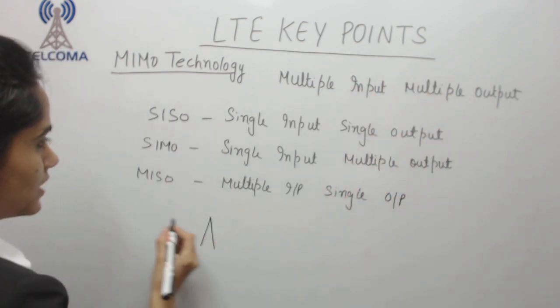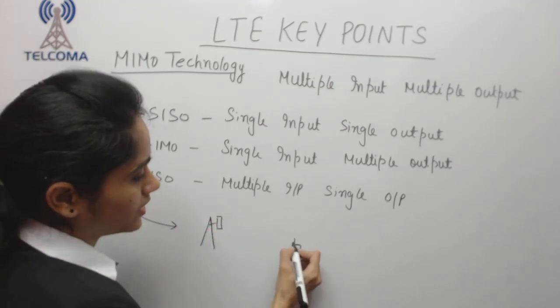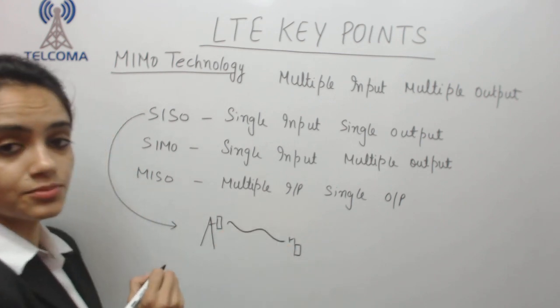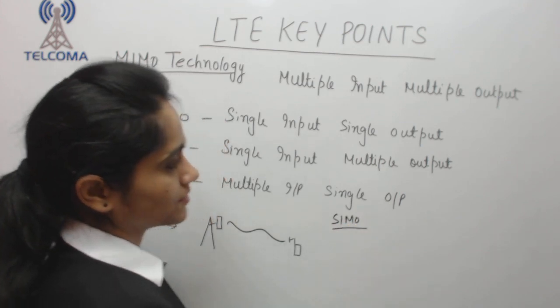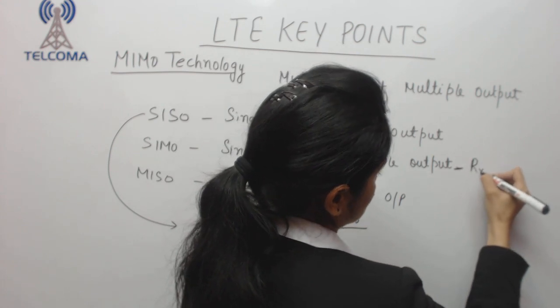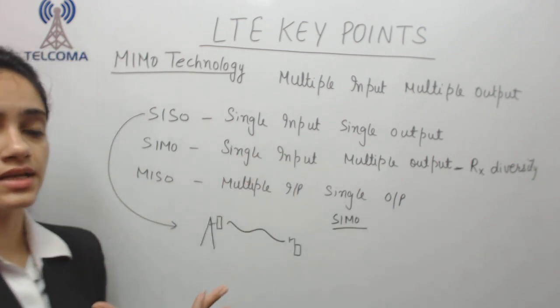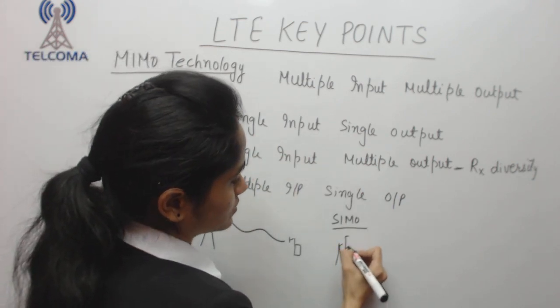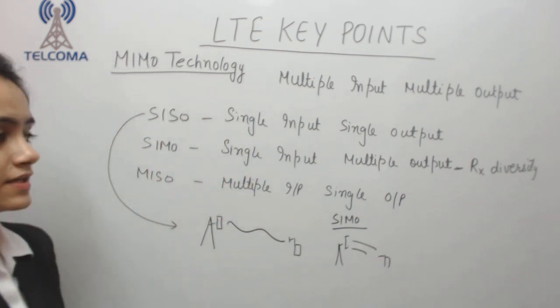Single input single output SISO means we have a single transmitter receiver and at the UE end also a single transmitter receiver. In single input multiple output we have increased the reception quality. This is receiver diversity. In order to increase the reception diversity we have added on receivers to transmitter one so that reception will be increased.